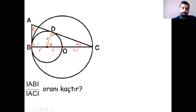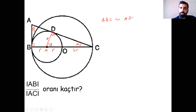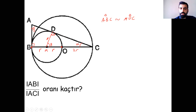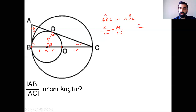Bizden istenen oran: AB/AC. Bu aslında alfanın karşısı bölü hipotenüs — yani sin alfa. Sin alfa büyük üçgende AB/AC olmuş olacak. Sin alfa değişmediği için küçük üçgende MDC üçgeninde tekrar sin alfa alıyorum. MDC üçgeninde alfanın karşısında R var, 90'ın karşısında 3R var. O zaman AB/AC = R/3R = 1/3.